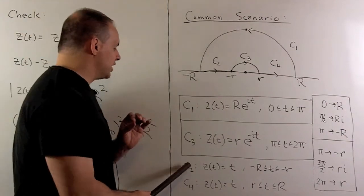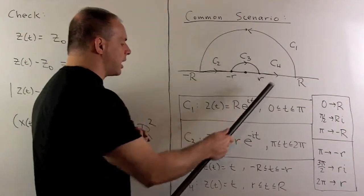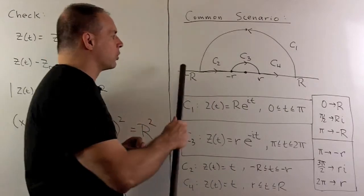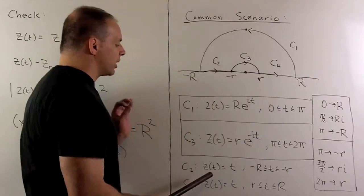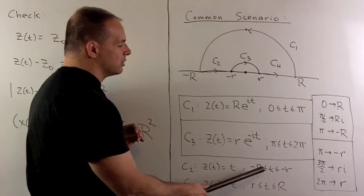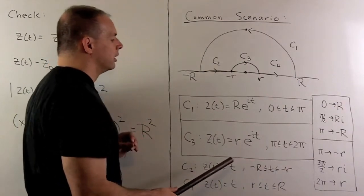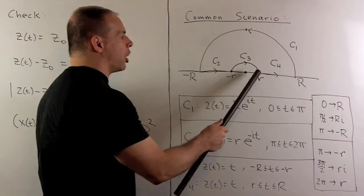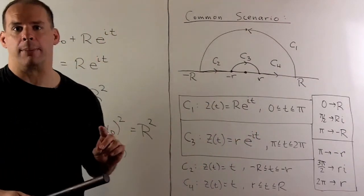Then for C2 and C4, the straight line segments, there's not much going on there. We're just working along the real axis. So I could just let our z of t be equal to t in both cases. And then it's just picking your parameters correctly. So going from minus r to r and r to capital R.